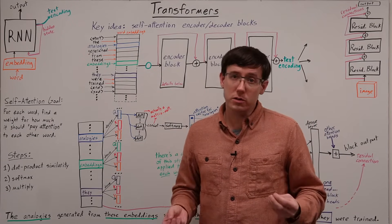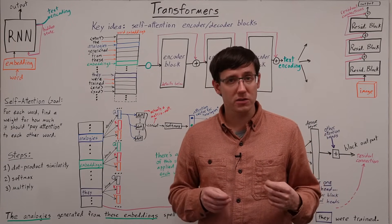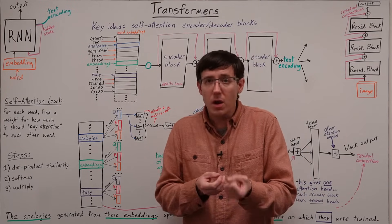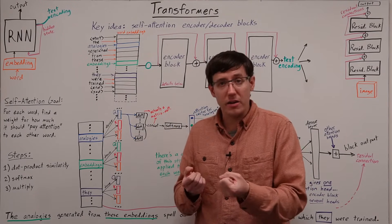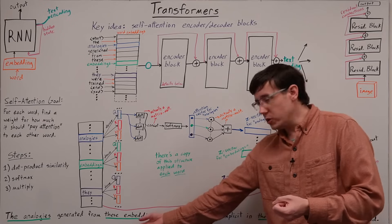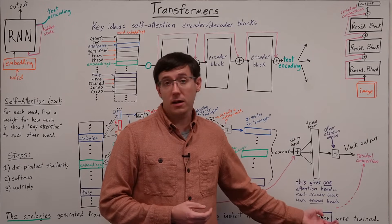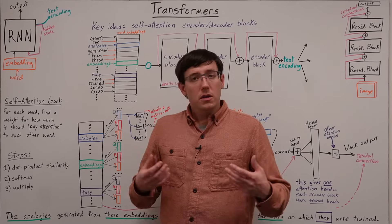And so for a neural network to do good natural language processing, we'd like to set up its architecture to help it with that sort of identification of what should it be paying attention to to figure out what's happening later in the sentence.